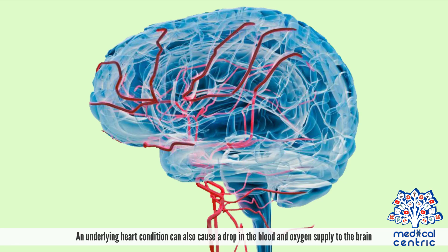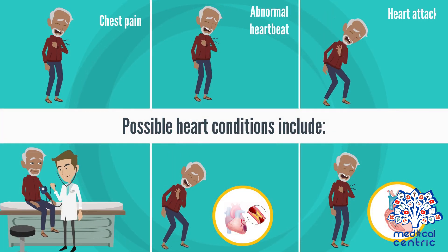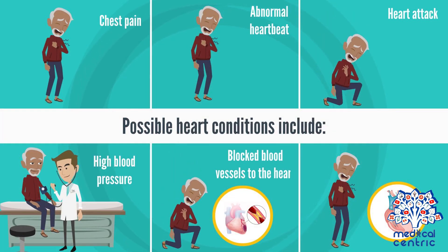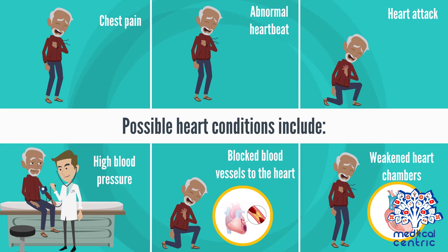An underlying heart condition can also cause a drop in the blood and oxygen supply to the brain. This is referred to as cardiac syncope. Possible heart conditions include chest pain, abnormal heartbeat, a heart attack, high blood pressure, and narrowed or blocked blood vessels to the heart, or weakened heart chambers.